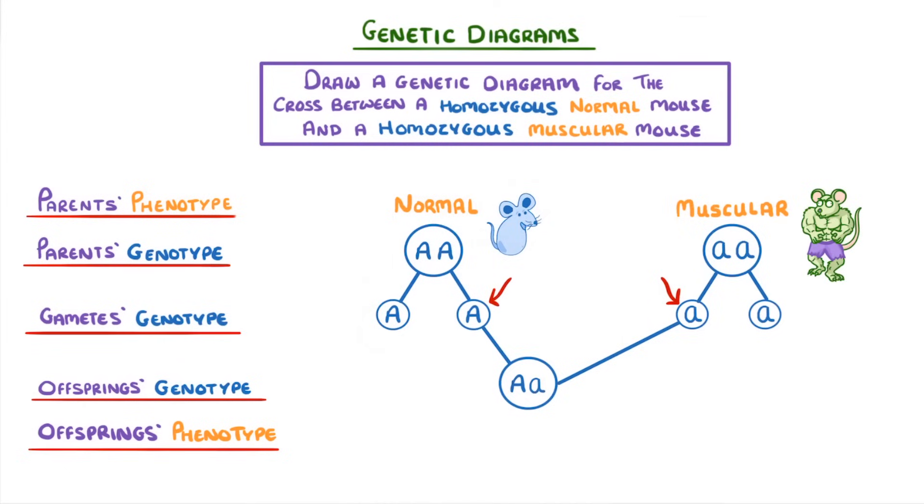And then we would do this exact same thing three more times so that we end up with the genotypes of all four of our offspring.